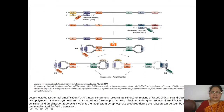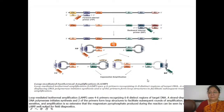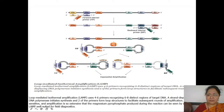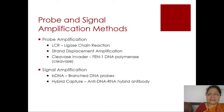Another isothermal amplification reaction is Loop-Mediated Isothermal Amplification (LAMP), which uses four to six different primers recognizing six to eight distinct regions of the target DNA. A strand-displacing DNA polymerase initiates synthesis and two of the primers form loop structures, enabling exponential amplification. The result can be visualized with the naked eye.